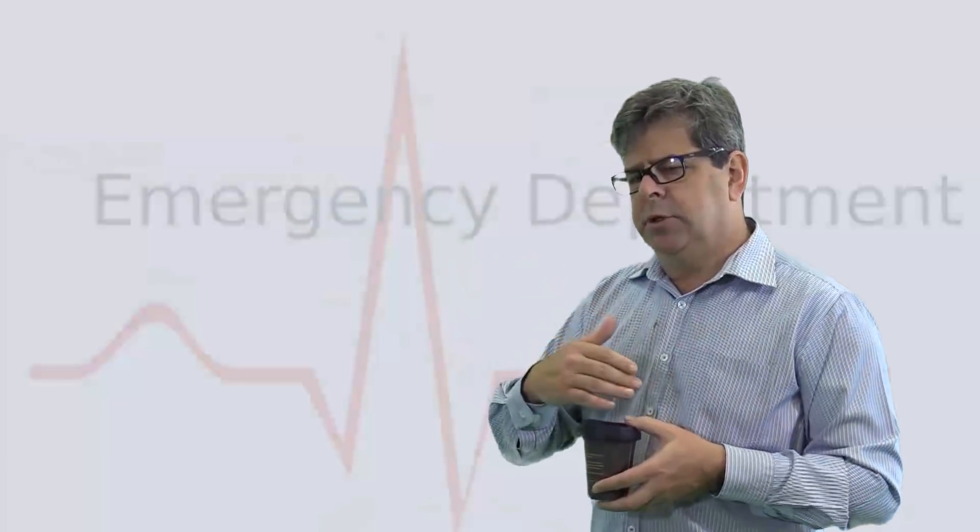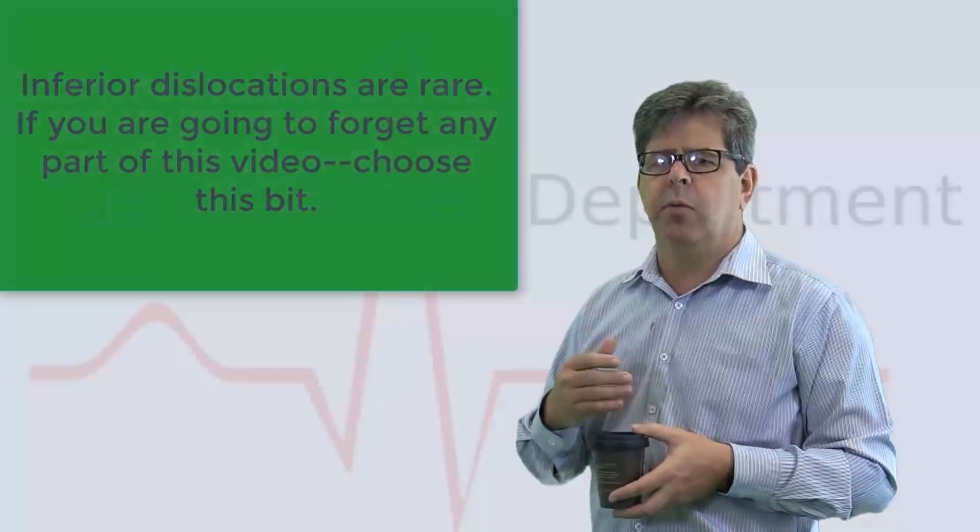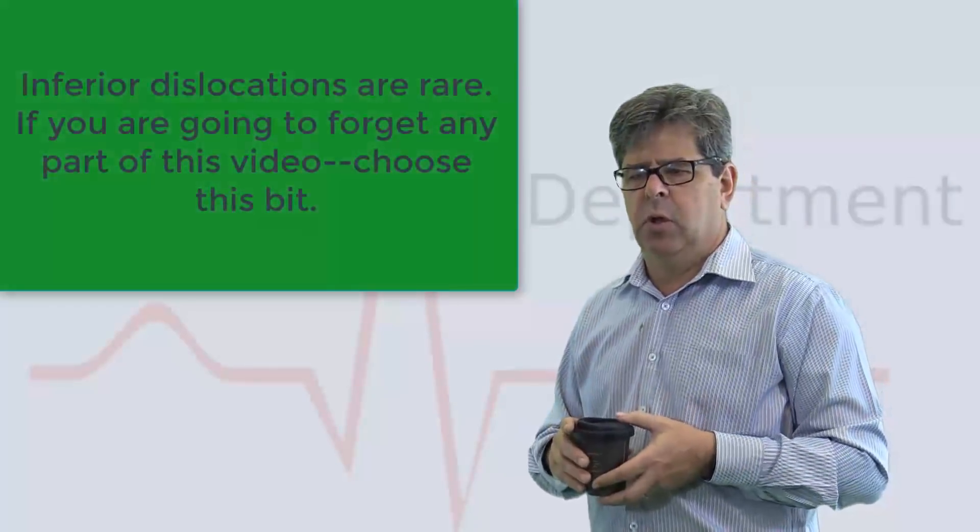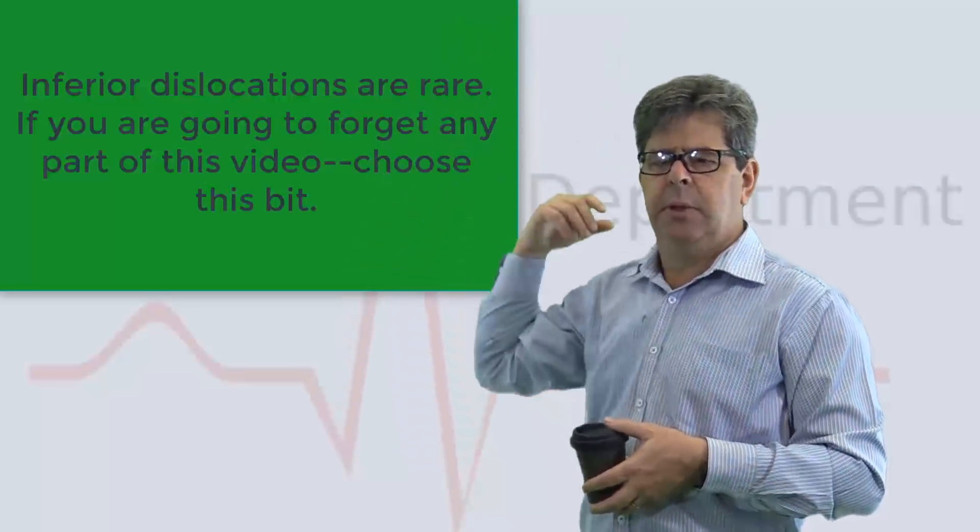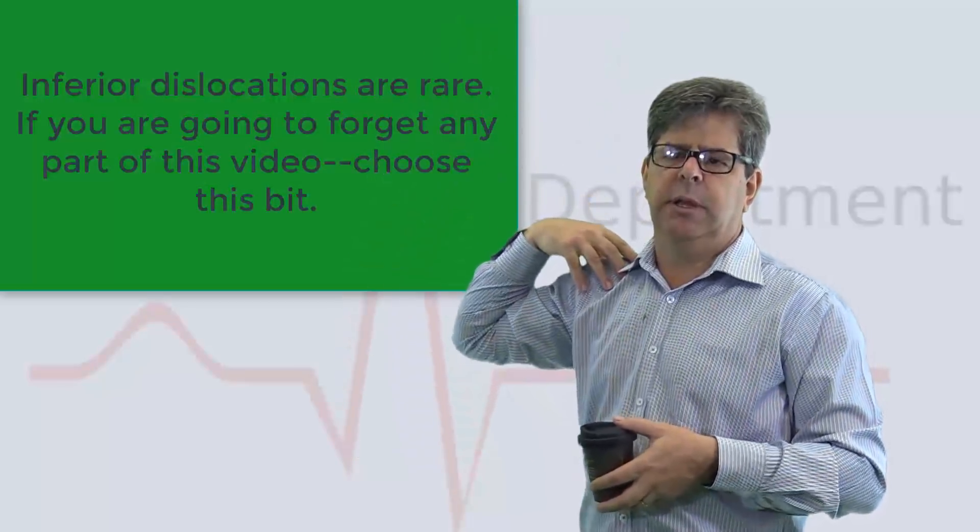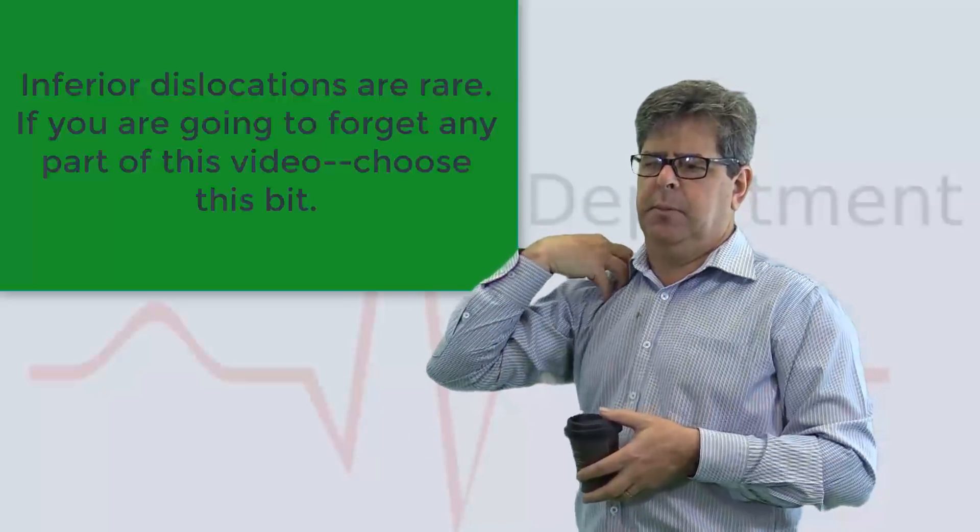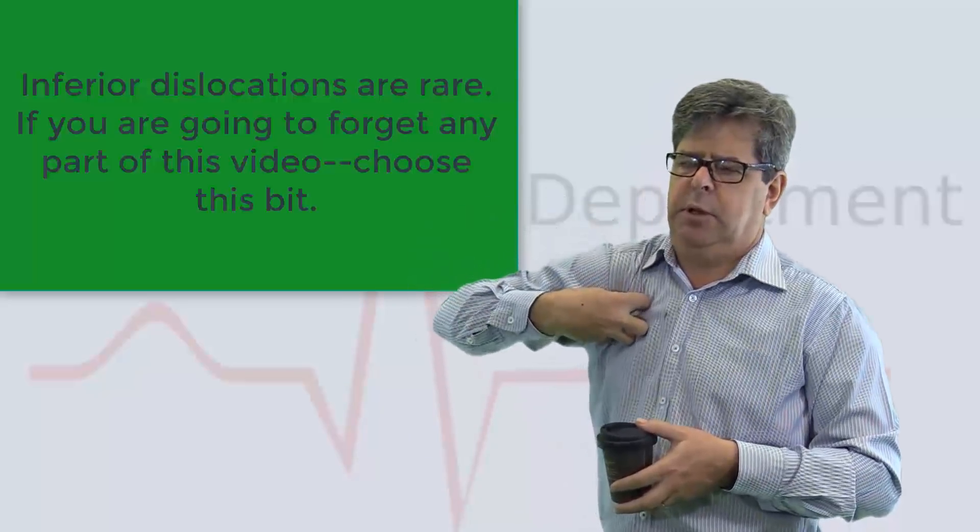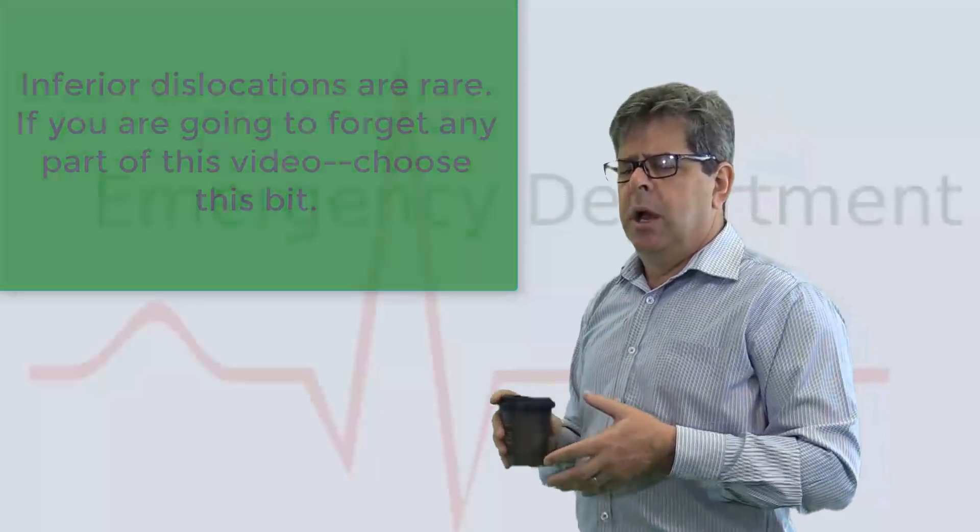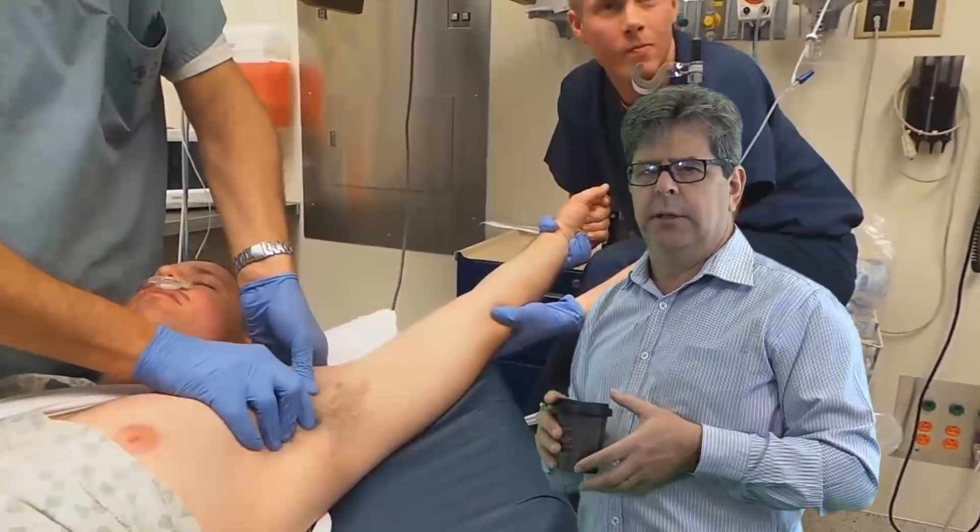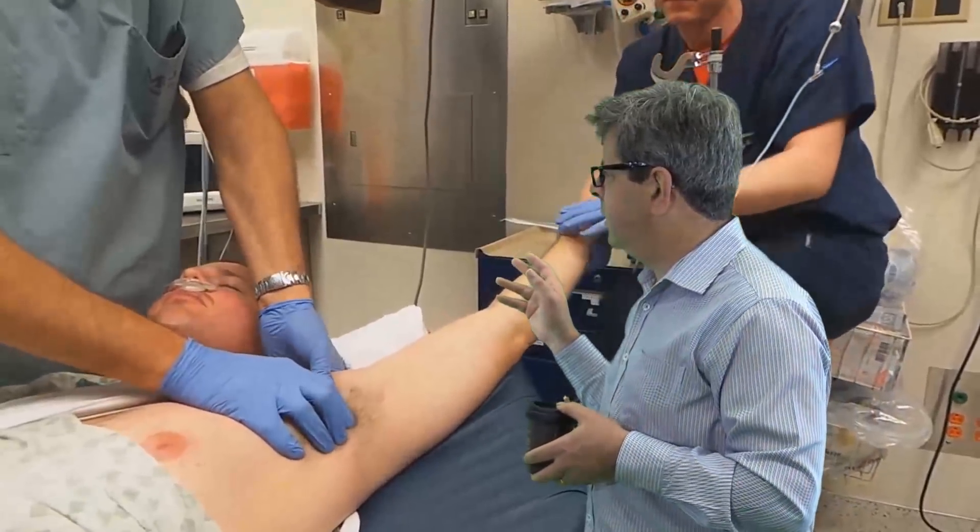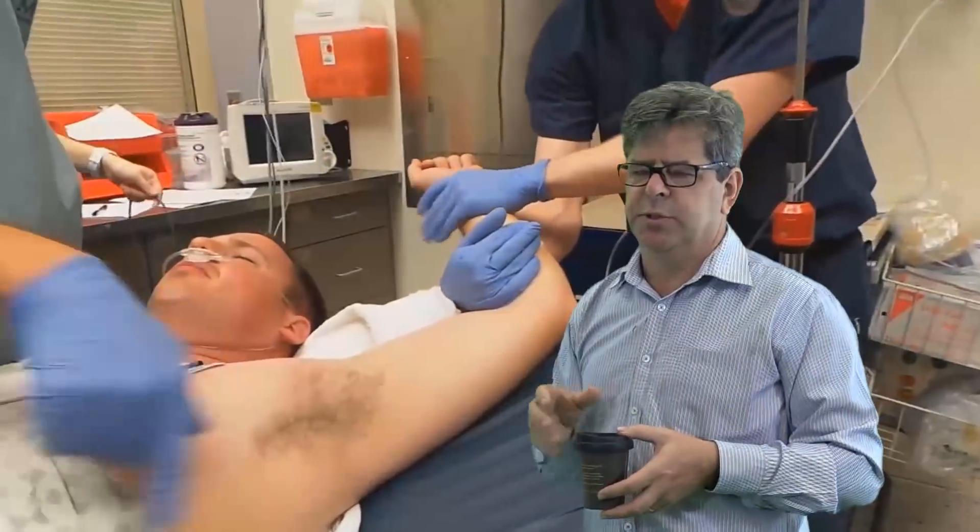So let's move on to the much less common, the really quite rare inferior dislocation or luxatio erecta, where you've had severe abduction of the arm forcibly and the head has gone inferiorly here. Under these circumstances, again, it's quite awkward to get back in. You need deep sedation and a combination of axial traction and, as can be seen from this video here, some counter traction and then to bring it back into position.